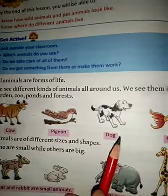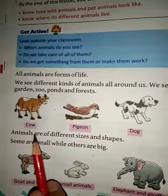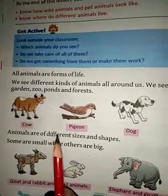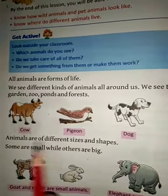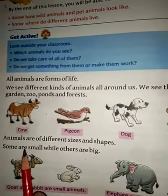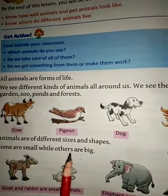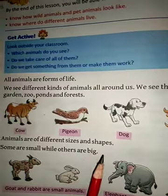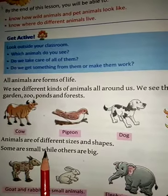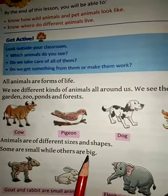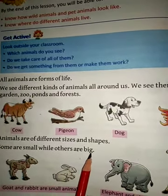Cow, pigeon, dog, fish. Animals are of different sizes and shapes. Some are small while others are big.